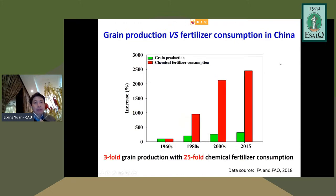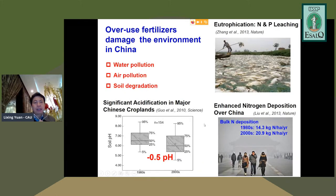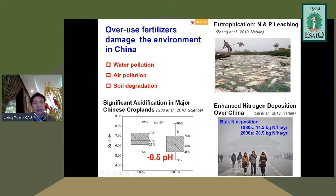With the large increase in grain production, China consumed a large amount of fertilizer. Grain production increased about three-fold, but chemical fertilizer consumption increased 25-fold — indicating very low efficiency. As a consequence, overuse of fertilizer, particularly nitrogen fertilizer, has severely damaged the environment through water pollution, eutrophication by nitrogen and phosphorus leaching, and soil acidification caused mainly by overuse of ammonium-based nitrogen fertilizer.